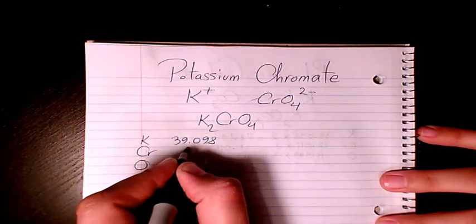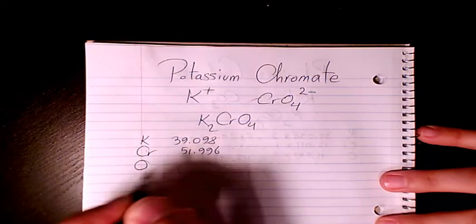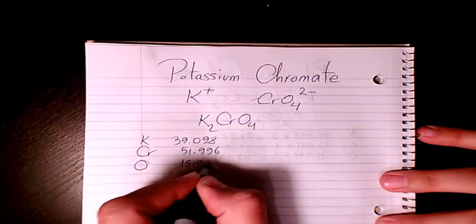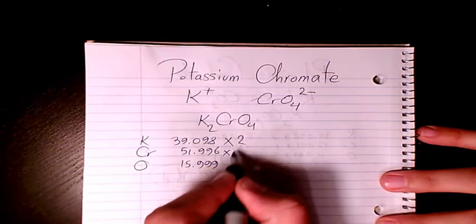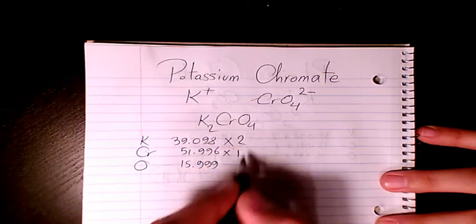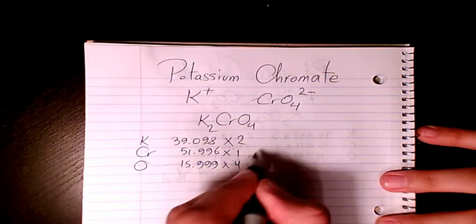Oxygen is 15.999. How many of potassium do we have? We have two. How many of chromium we have? Just one. And oxygen is just four.